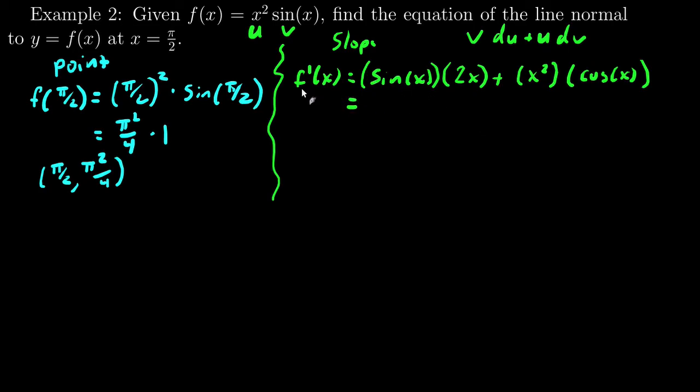And, you know, I could rewrite this. I will. Well, you can just go on and put in the π/2 at this point, but I'll write it a little bit neater. So, 2x sin(x) + x^2 cos(x).